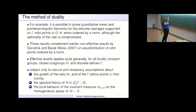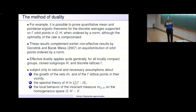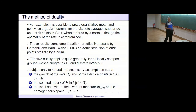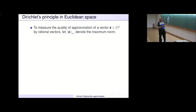Now I would like to present what we call intrinsic Diophantine approximation and make a tight comparison to classical Diophantine approximation. We recall the standard Dirichlet's theorem in Euclidean space. We want to measure the quality of approximation of a vector in R^d by rational vectors. Let X denote the maximum norm and psi from R to (0,1) be a non-increasing gauge function. One then calls X psi-approximable if there are infinitely many solutions to the Diophantine inequality |X − P/Q| < psi(Q)/Q.